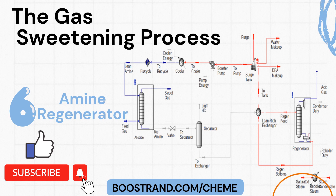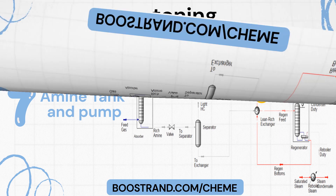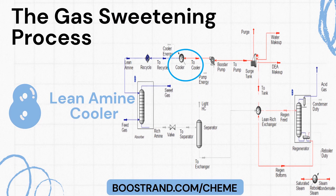After being heated, rich amine is introduced to the amine regenerator, or stripper, to release the absorbed acid gases, which are then removed. The system then adjusts amine concentration by adding the required makeup and pumping the lean amine back to the absorber. Regenerated amine is cooled before recycling to the absorber.